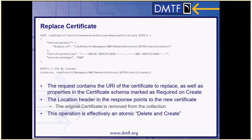The Replace Certificate action performs an atomic delete followed by a create operation for replacing a single certificate. A client would POST to the replace certificate action target, providing three properties in the body: the certificate URI, which tells the service which certificate is going to be deleted; and certificate string and certificate type, which encapsulate the certificate payload that will replace it. Certificate type tells the service the format — for example, PEM, meaning a PEM-encoded X.509 certificate — and certificate string contains the contents. The response contains the location header for the newly created certificate on the service.